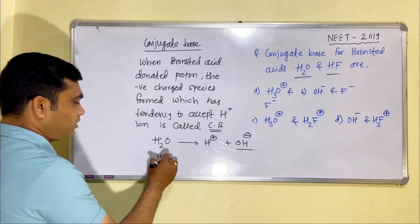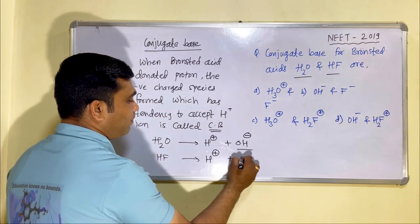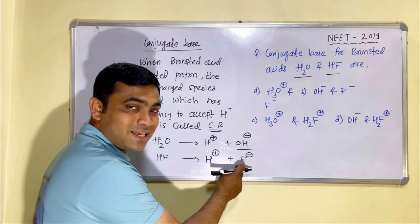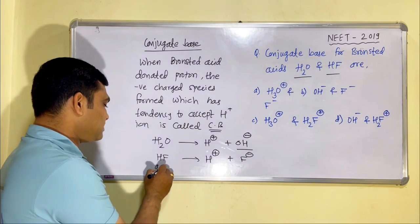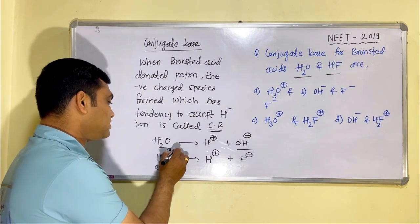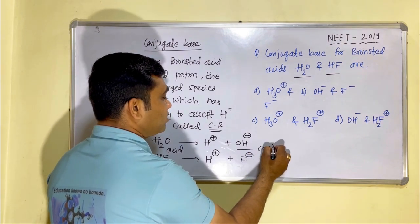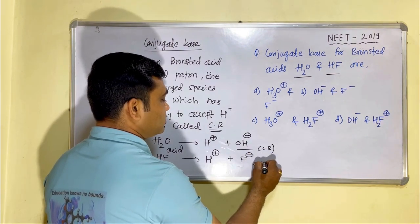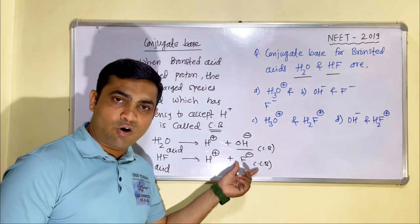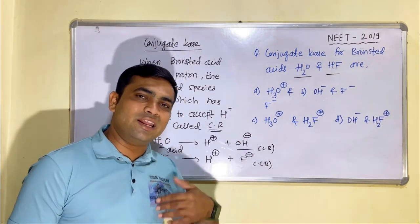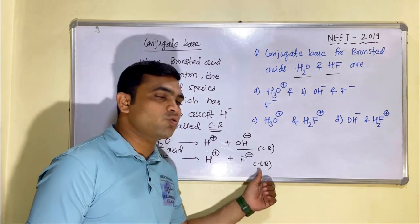Similarly, HF donates an H+ ion to form F⁻ ion. The negatively charged species F⁻ is the conjugate base of this acid. H2O and HF are the acids, and OH⁻ and F⁻ are their respective conjugate bases. A negatively charged species which has the tendency to gain or accept an H+ ion is called the conjugate base.